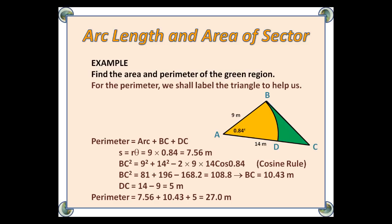The arc is r theta, or 9 times 0.84, which is 7.56. We use the cosine rule to work out BC, so 9 squared plus 14 squared minus 2 lots of 9 times 14 cos 0.84. When we square root, we get 10.43. And then DC is just the difference between 14 and 9, which is 5.